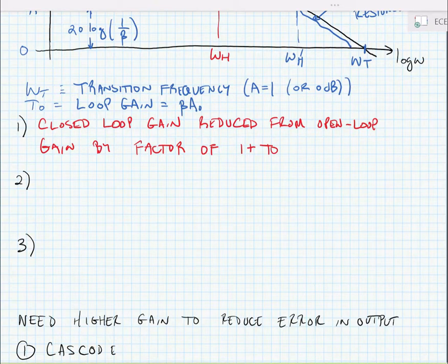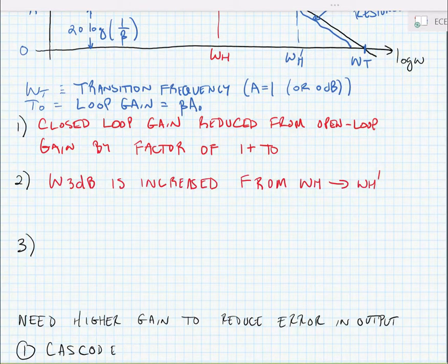Also, we see that the high frequency pole is increased from omega H to omega H prime. Indeed, you can show that omega H prime is equal to omega H times 1 plus the loop gain.